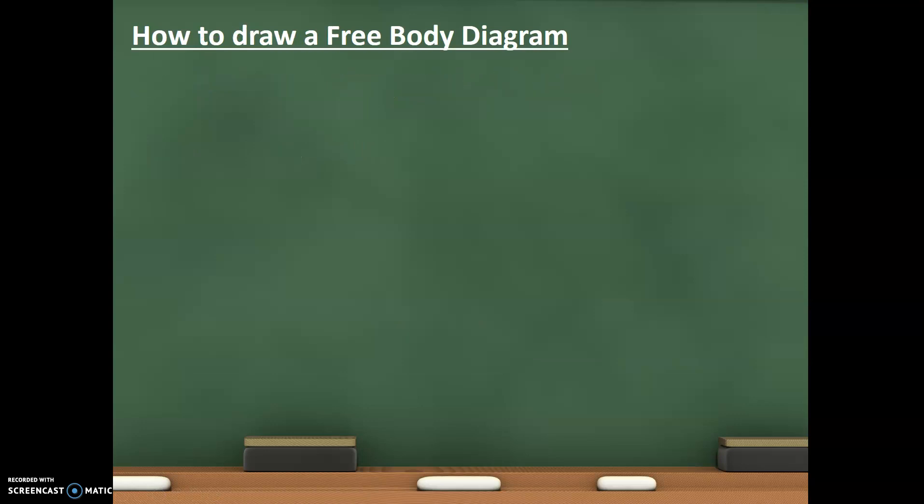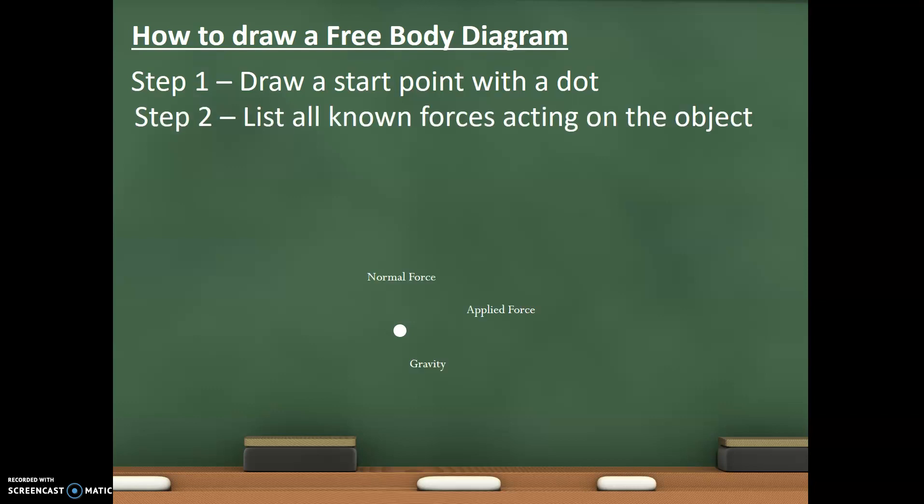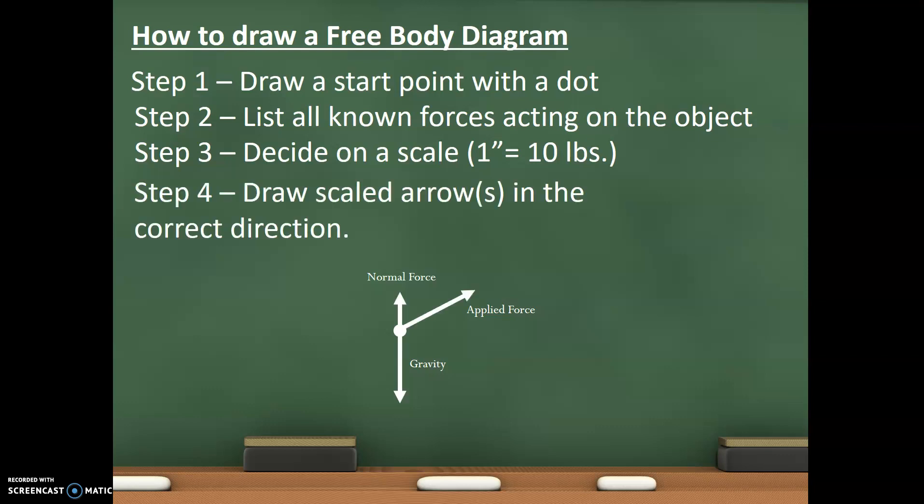So, again, let's go over how to draw free body diagrams. We will have to do that again and again. Step one, we draw a dot. That represents whatever object we're looking at. Then we list all the forces acting on that object. Then we decide on a scale. Let's say, you know, 1 inch equals 10 pounds. That could be an easy scale. Then we draw all our arrows in the correct directions. Gravity pulling down, normal force pulling up, pulling perpendicular to the surface, and then my applied force, which is that little rope being pulled at 30 degrees. And make sure I mark that angle.